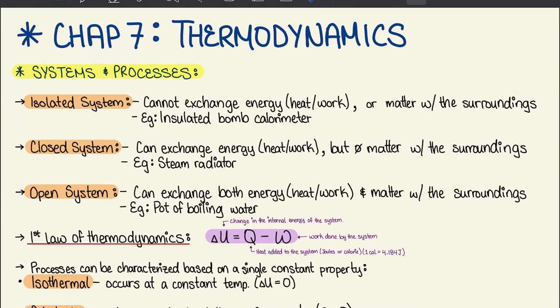Welcome back to General Chemistry Chapter 7: Thermodynamics. We're going to start with 7.1 where we talk about systems and processes. There are three important types: an isolated system cannot exchange any type of energy or matter with the surroundings — an example is an insulated bomb calorimeter. A closed system can exchange energy but not matter — for example, a steam radiator. An open system can exchange both energy and matter, like a pot of boiling water.